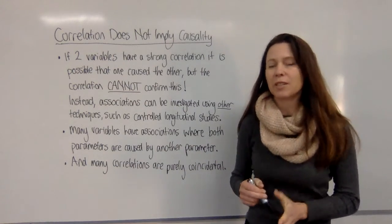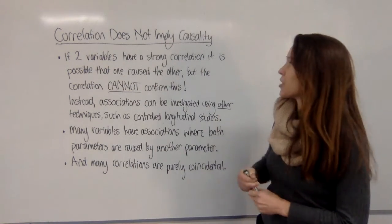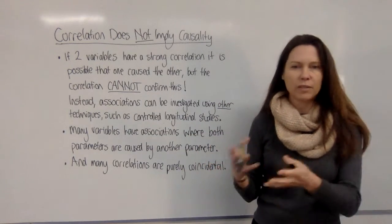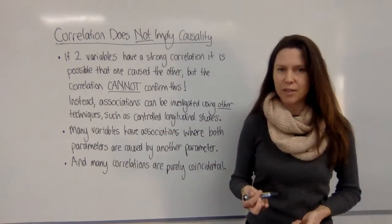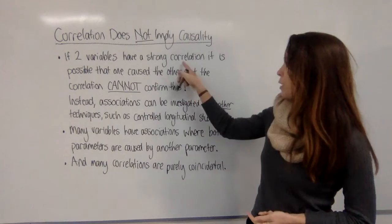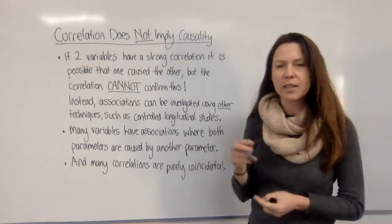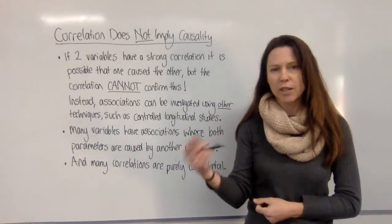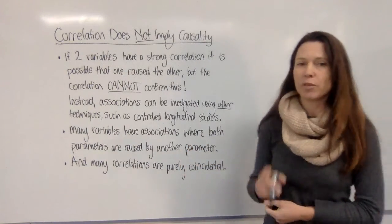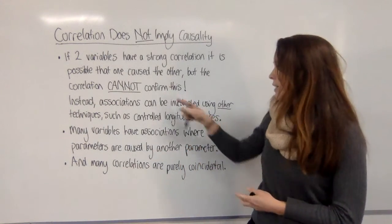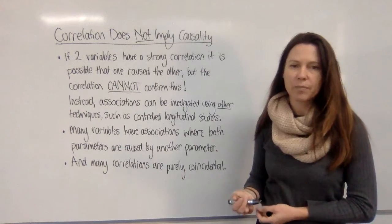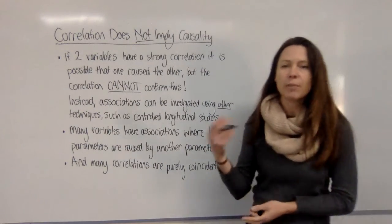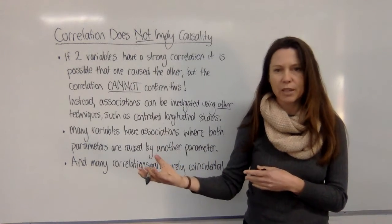It can't be overemphasized that correlation does not imply that one variable causes another. If two variables have a strong correlation, that's often enough to say there might be something going on and we should check it out, because it's possible that one is causing the other. But we can't confirm this from the correlation alone — instead, we need to investigate using other methods, such as a controlled longitudinal study.